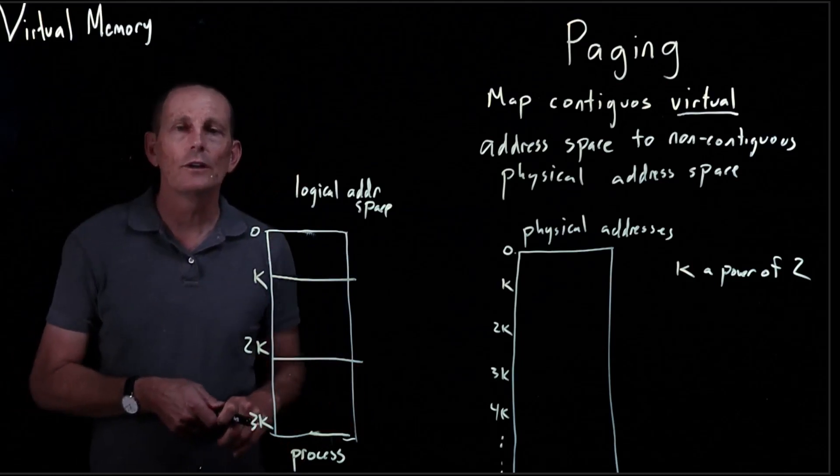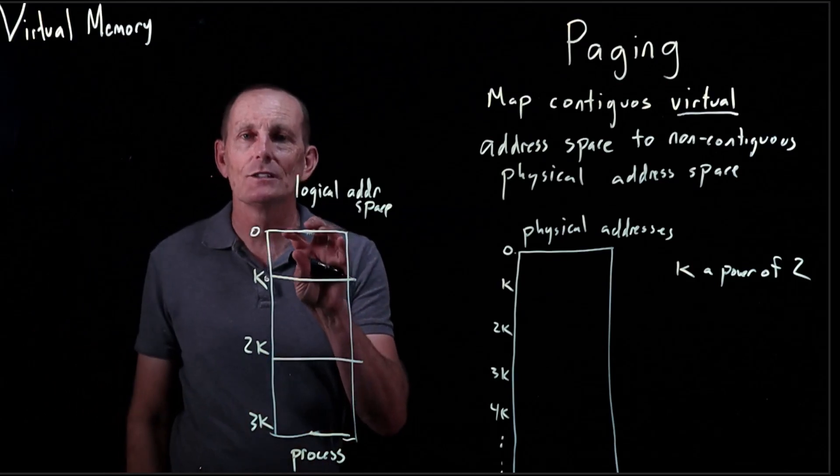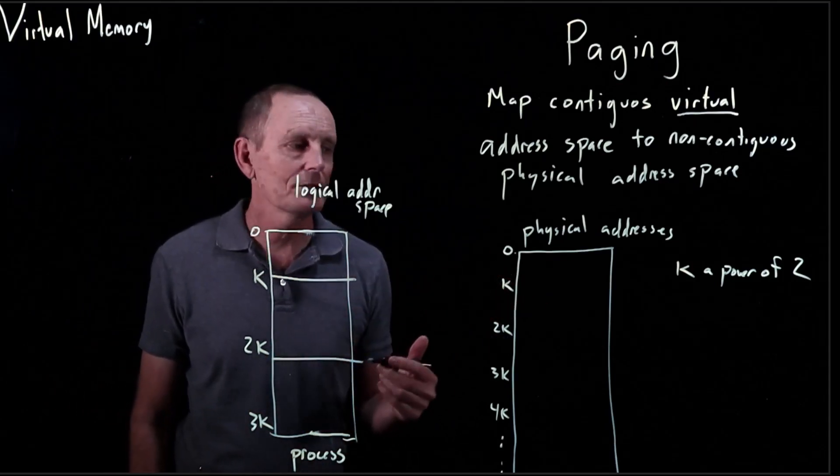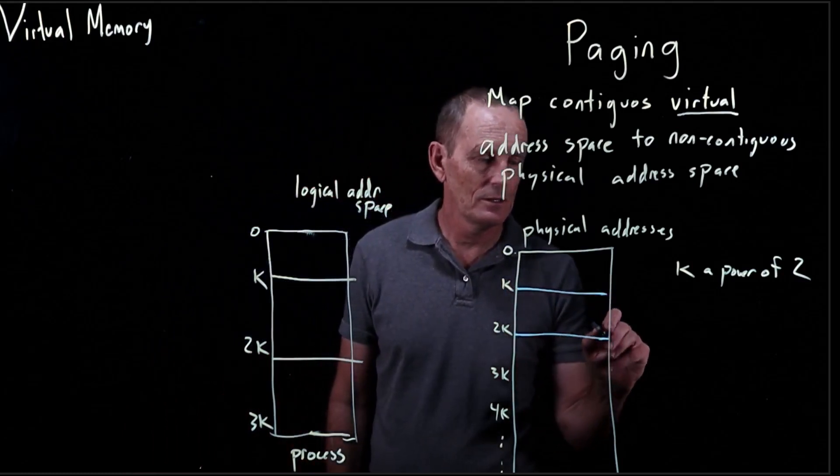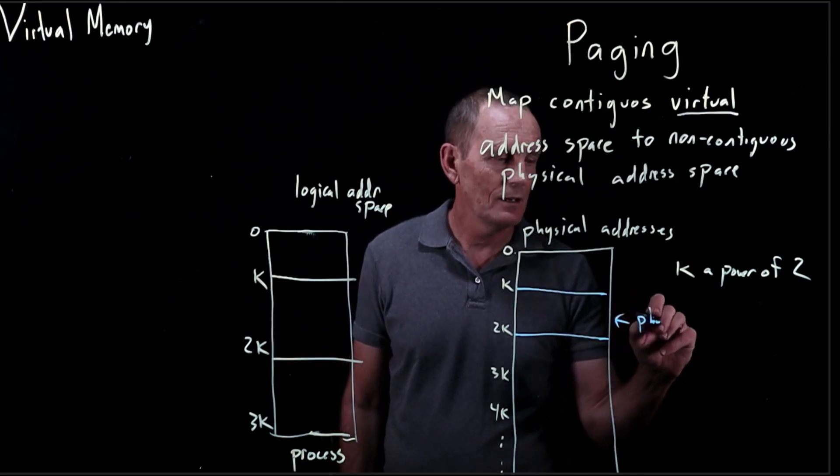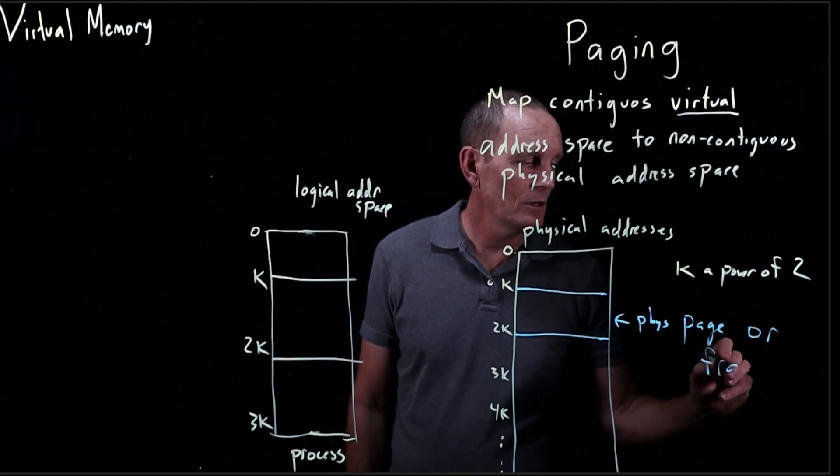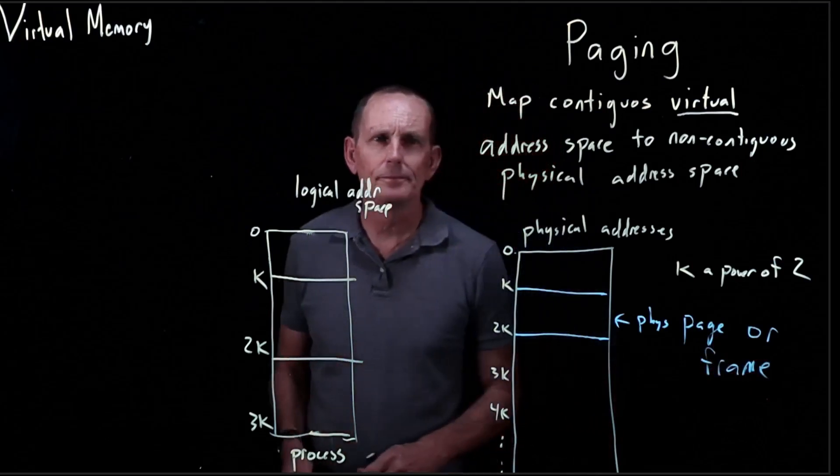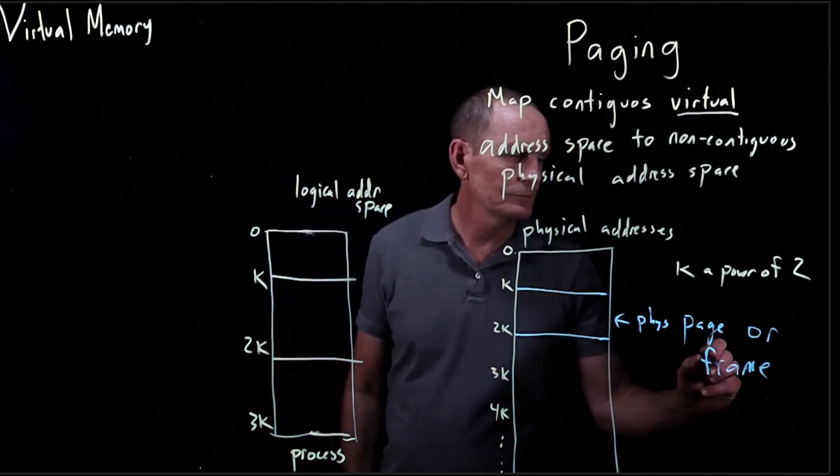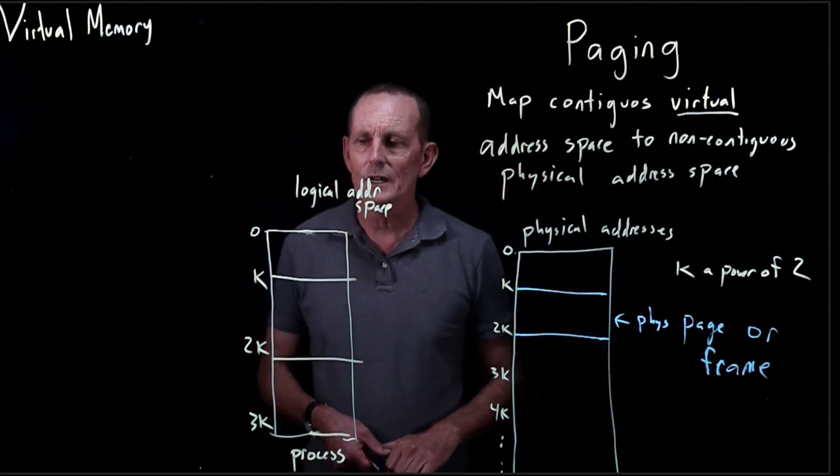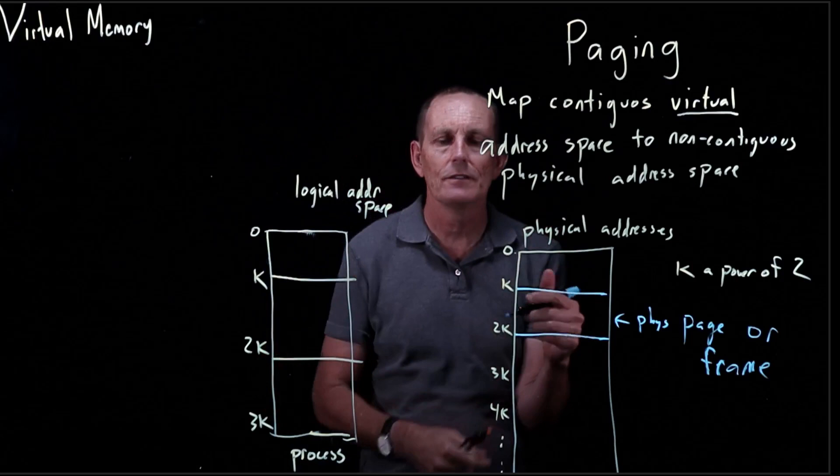And then what we're going to do is map these logical pages into physical pages, also known as frames. So let's take one of these - this is a physical page or frame. We're going to set up a mapping that can be arbitrary between a page in the logical address space and the physical address space.